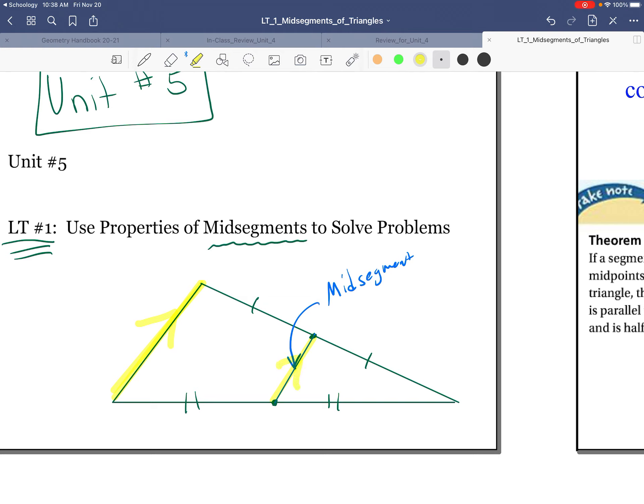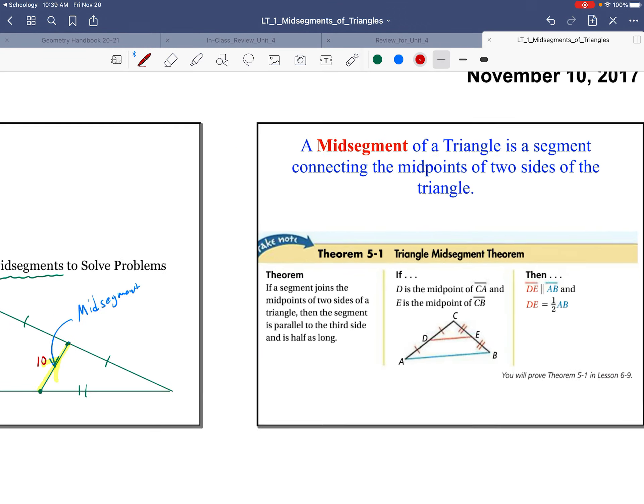The second property is that it's going to be half the length. So if this is a length of 20, the length of our mid-segment would be 10. So that's what a mid-segment is. The two properties are: it's parallel to the base side and it's half the length.